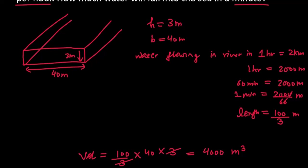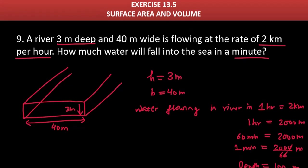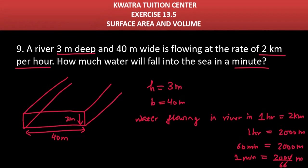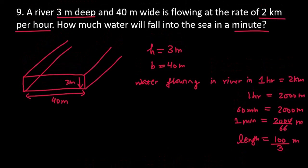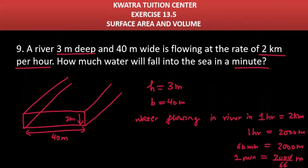100 into 40 is how much? 4,000 meter cube. So, yes. This is the volume of the water which will fall into the sea in a minute. 1 minute. How much water can flow? It can be about 4,000 meter cube.